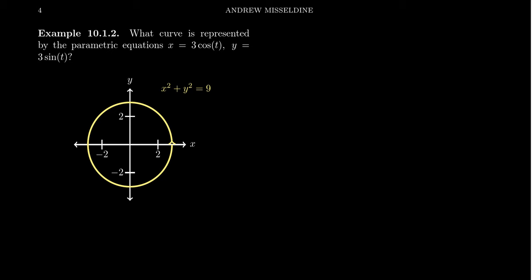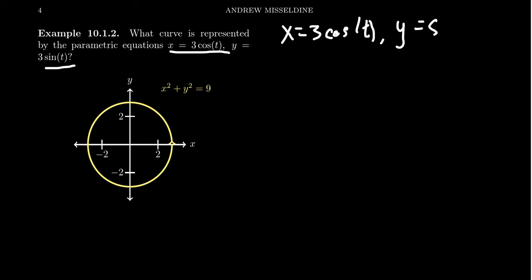And the answer is yes, we can. So consider our first parameterization right here, where we're going to take x equals 3 cosine of t, and we're going to take y equals 3 sine of t. This is a parameterization — what type of curve does this form in the plane, and can we remove the parameter?